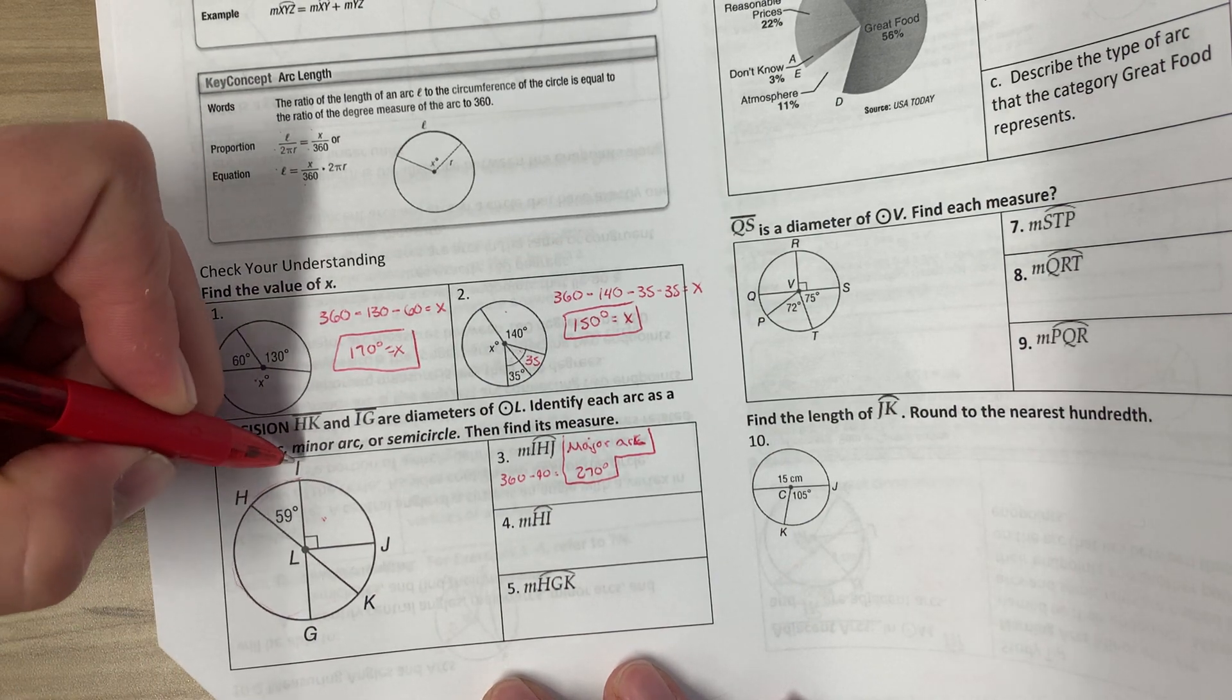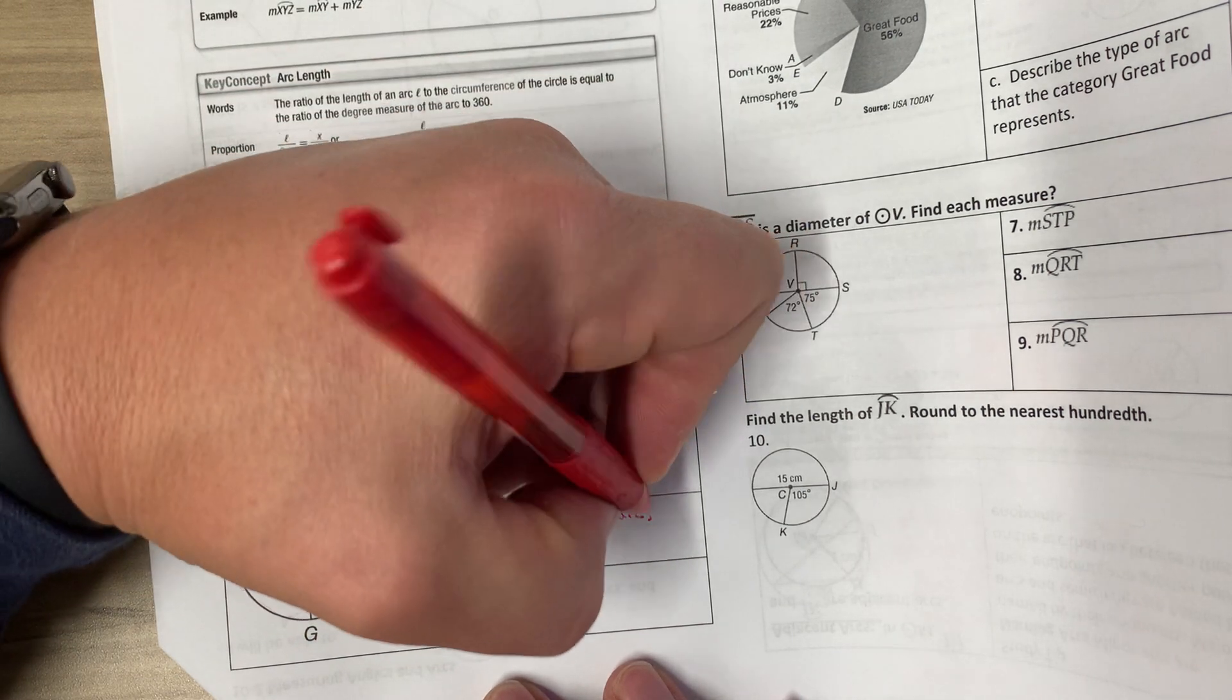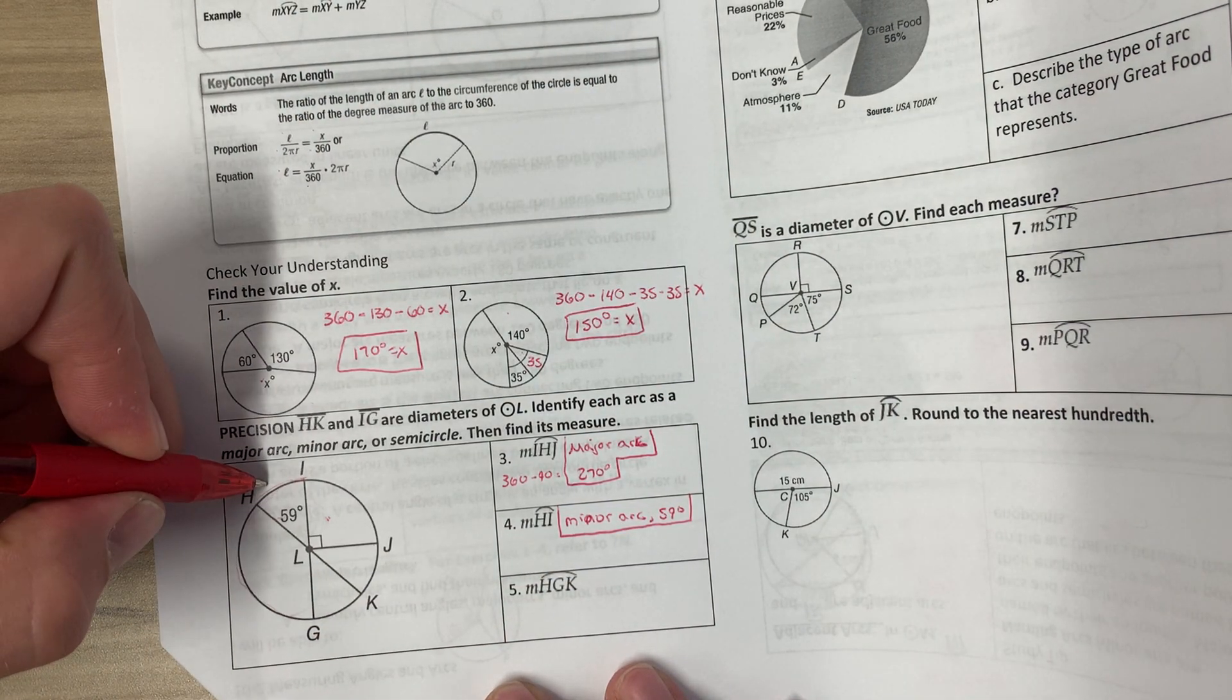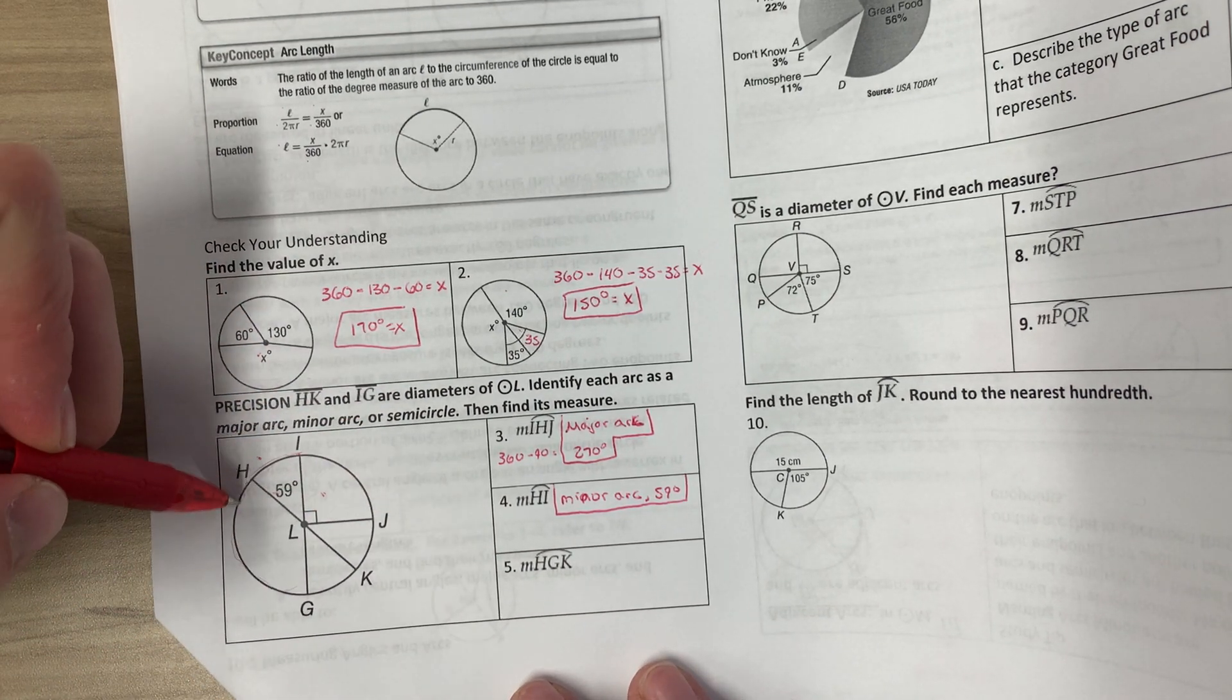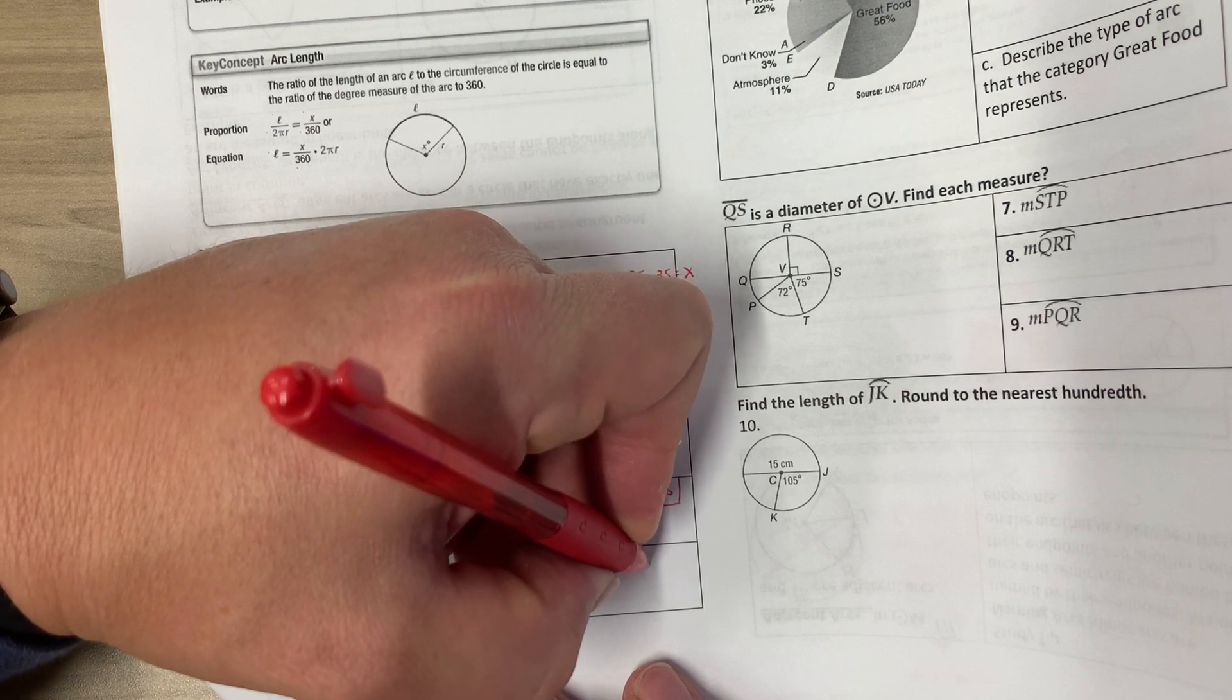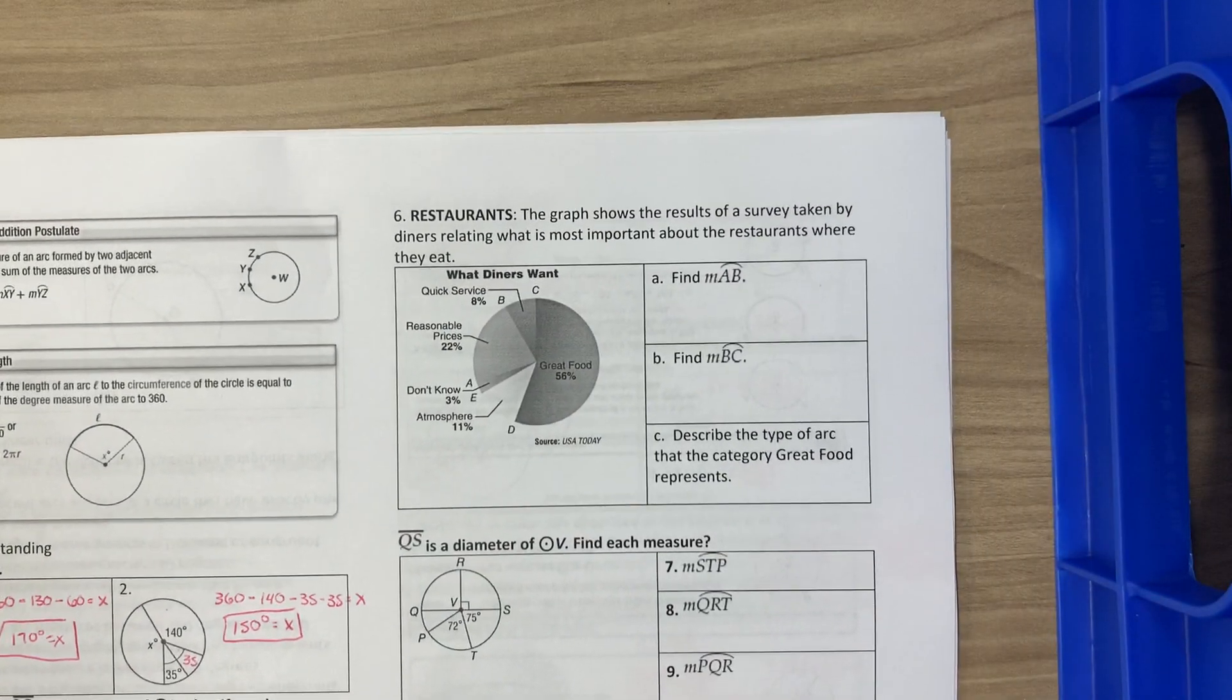HI is going to be a minor arc because it's going to be less than 180. And it is going to equal 59 degrees because that's what they gave us. That means this is 59. And the last one, HGK, that is a semicircle, which is always 180 degrees.